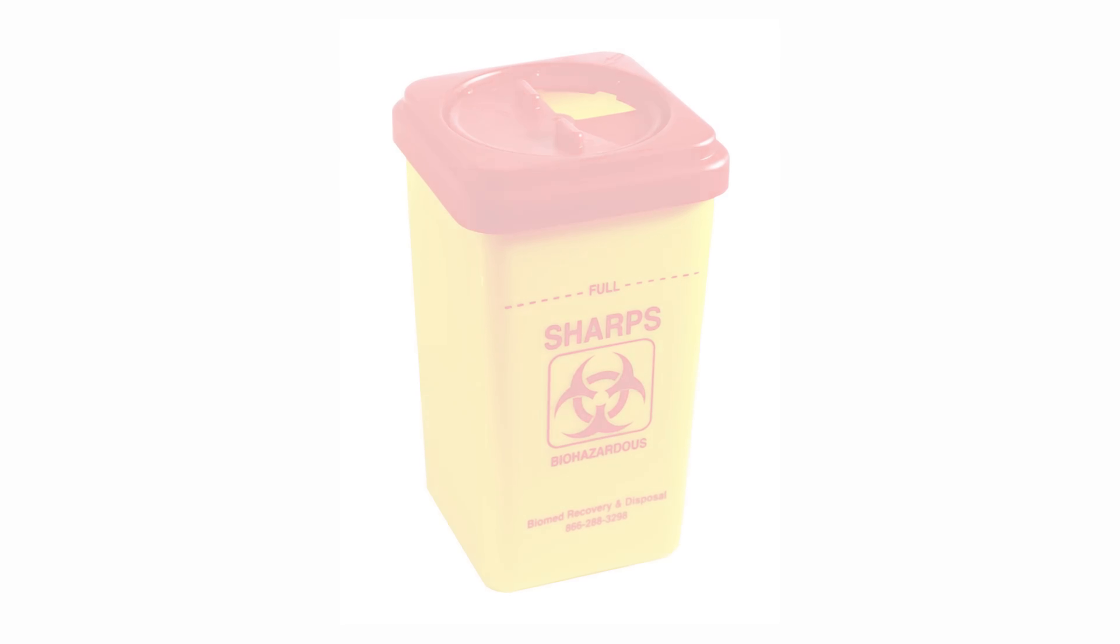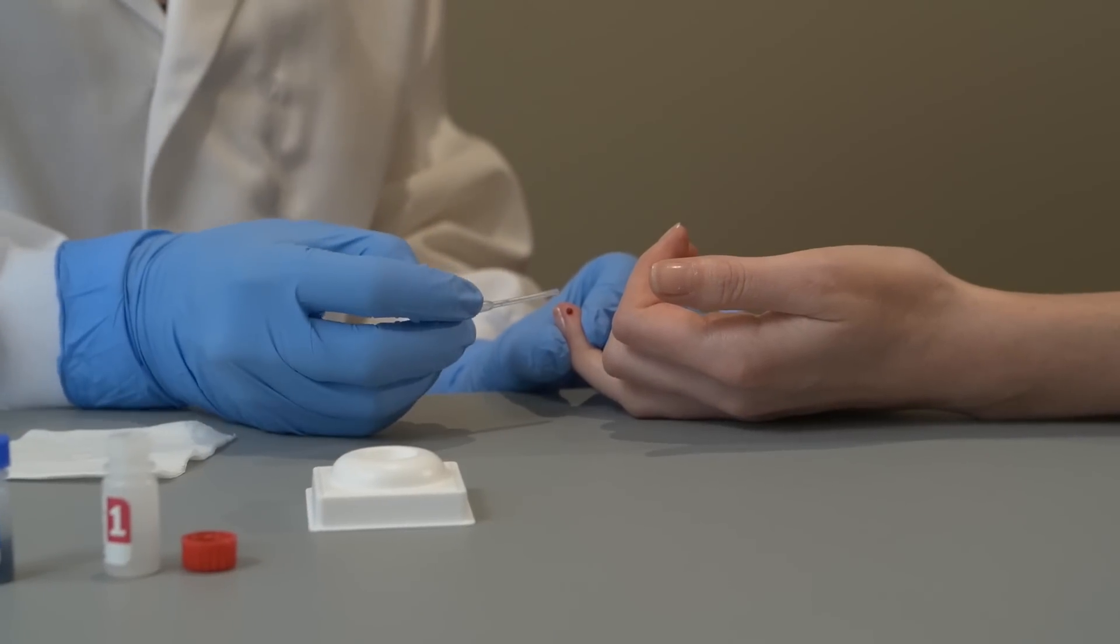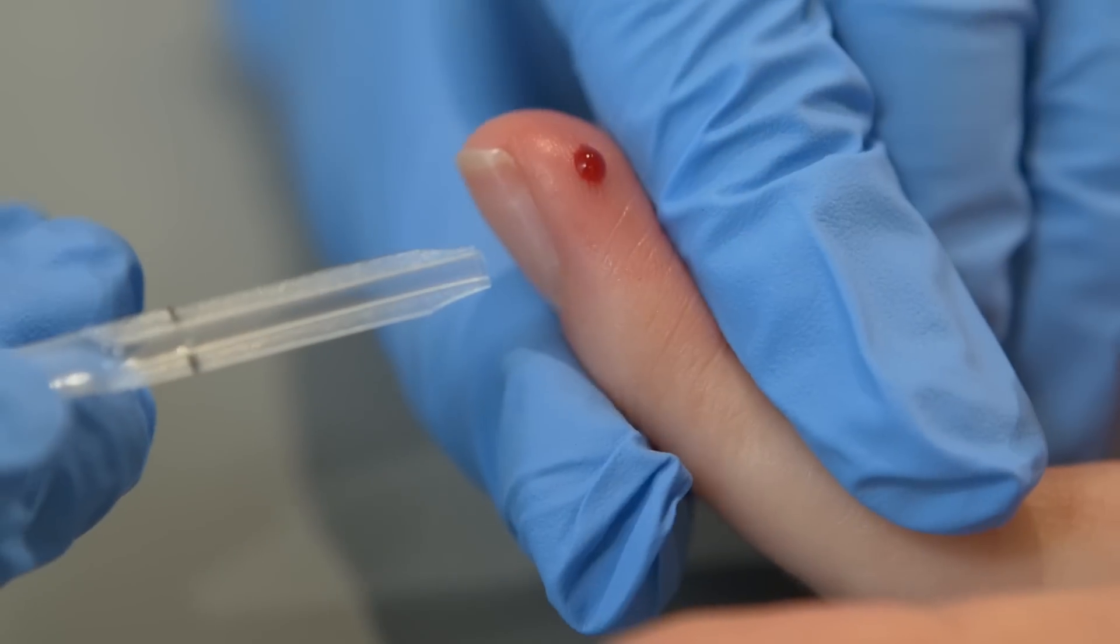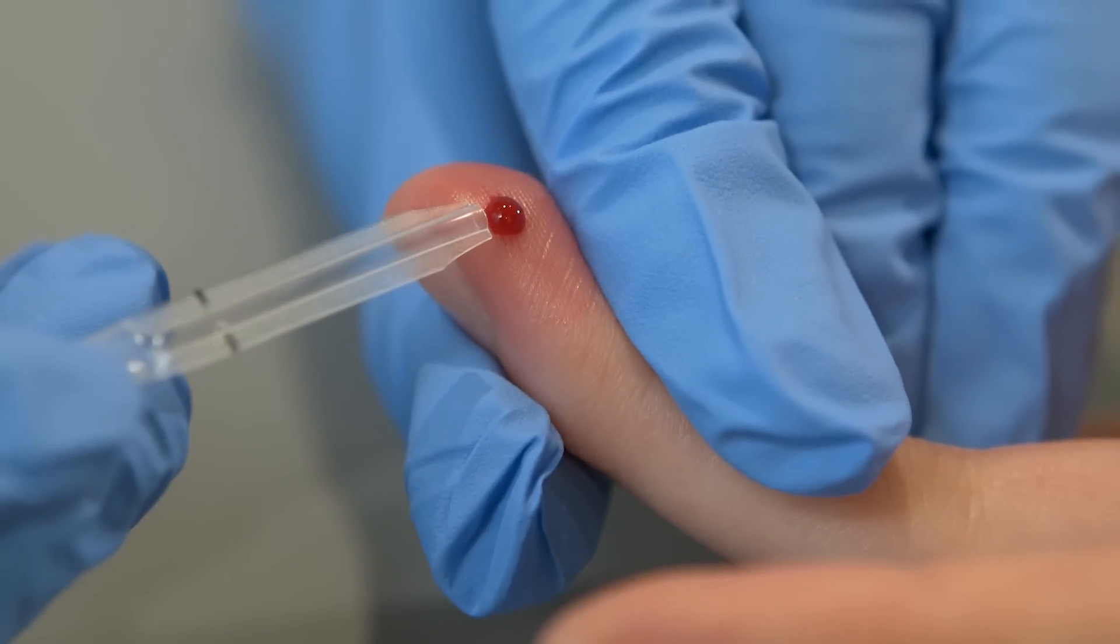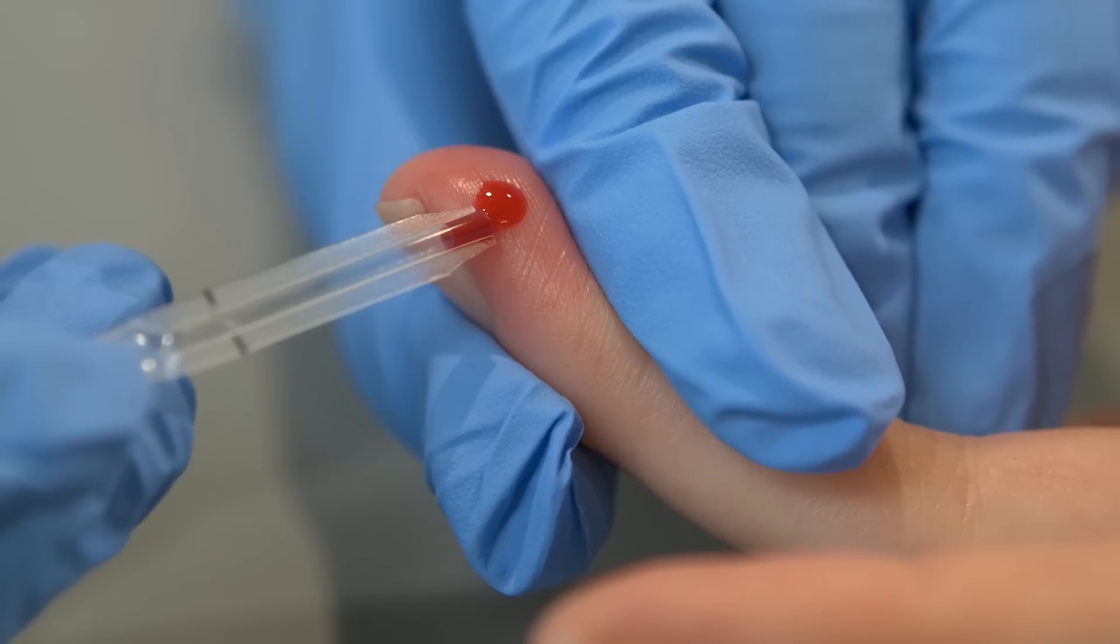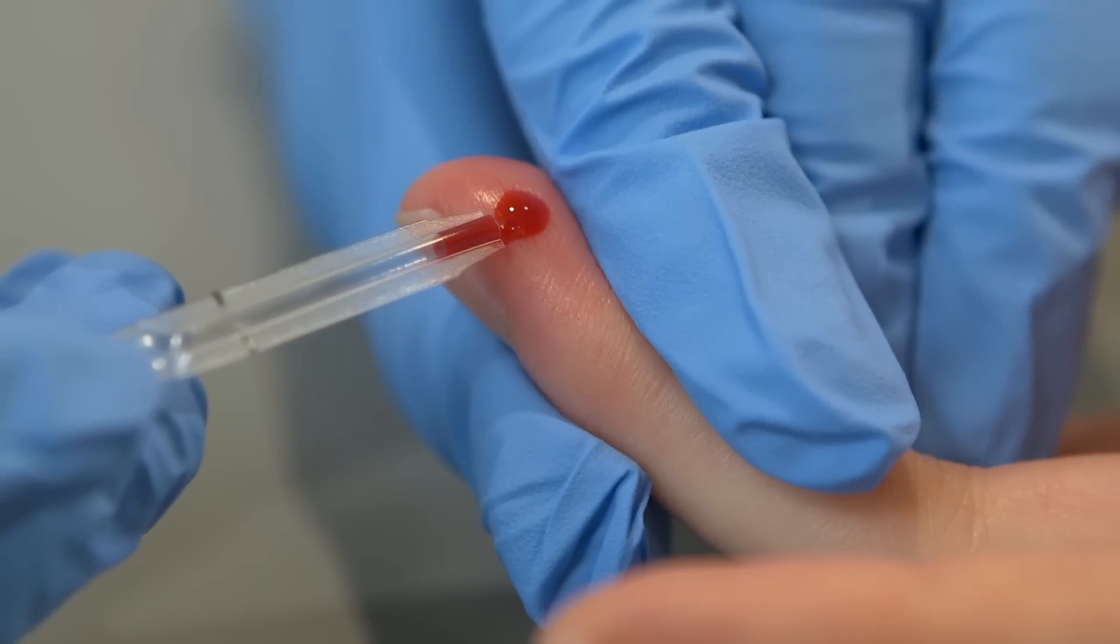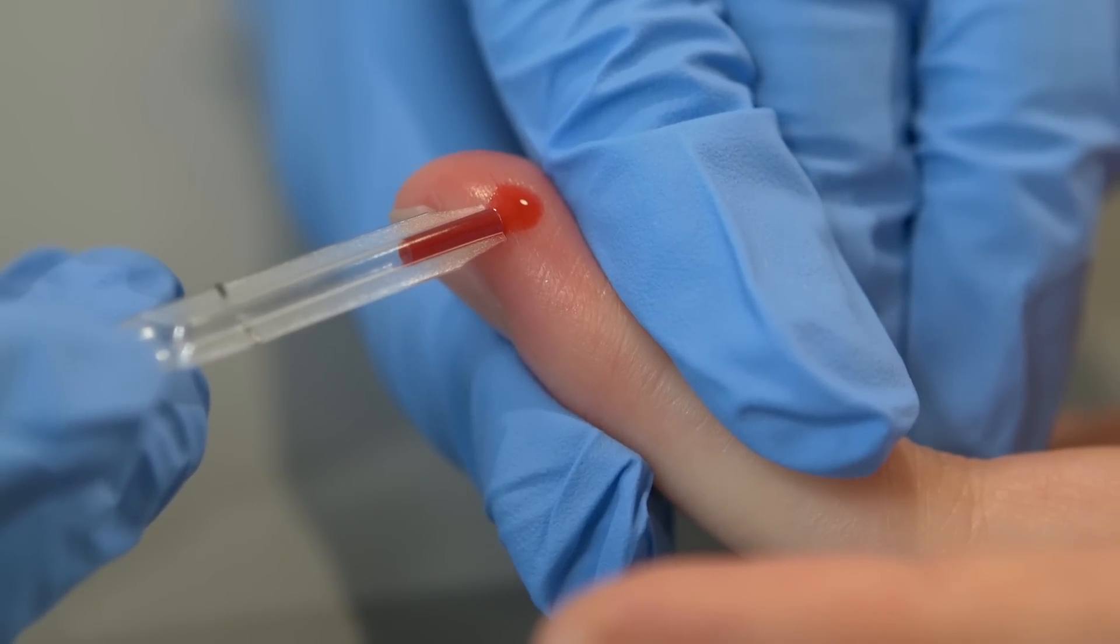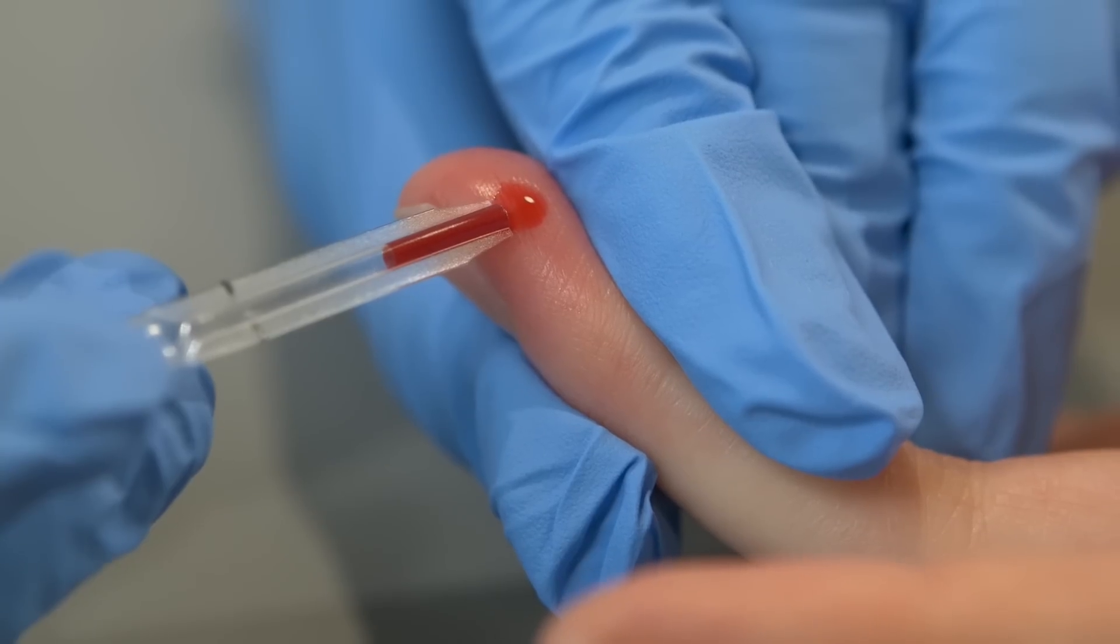Do not squeeze blood from the finger until you have the pipette ready in hand for collection. Lightly squeeze the finger in one motion towards the tip to release a bead of blood. With INSTi, the first drop of blood does not need to be wiped. Hold the pipette horizontally and carefully touch the tip of the pipette to the bead of blood.